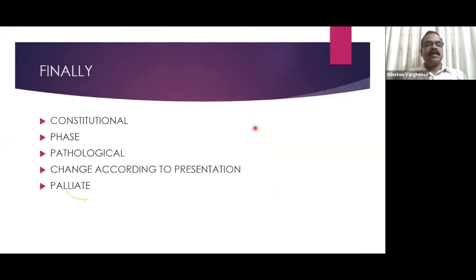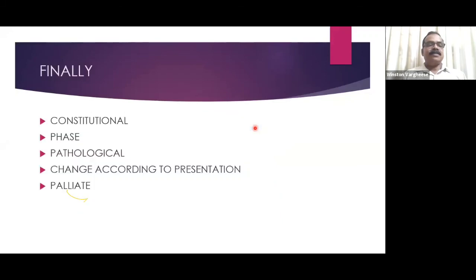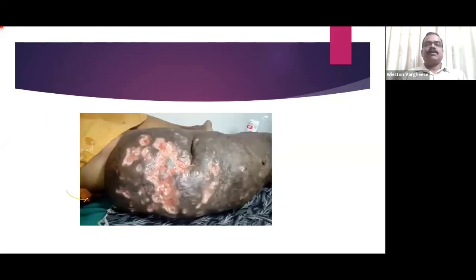Natrium muriaticum was then prescribed. The doctor indicated he would show the outcome of what Natrium muriaticum achieved in this lymphatic ulcer case, demonstrating again how a constitutional remedy based on the patient's deeper emotional history can unlock otherwise resistant cases.